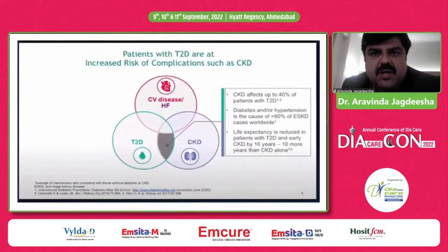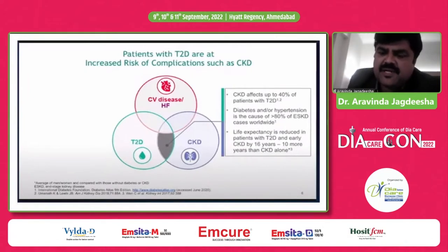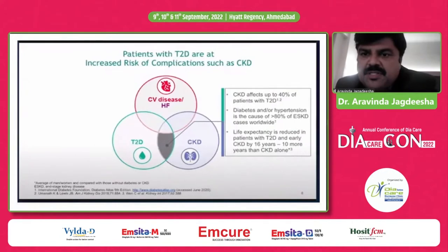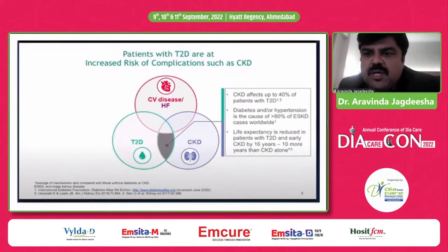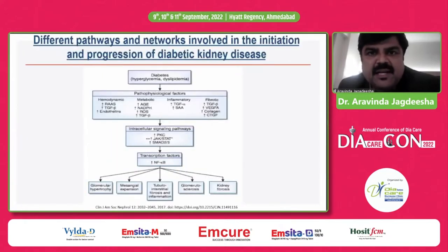Patients with type 2 diabetes are also at increased risk of CKD. CKD affects up to 40 percent of patients with type 2 diabetes. Diabetes and hypertension are the cause of more than 80 percent of end-stage kidney disease cases worldwide. Life expectancy is reduced in patients with type 2 diabetes and early CKD by 16 years — 10 more years than CKD alone. Different pathways and networks are involved in the initiation and progression of type 2 diabetic kidney disease.